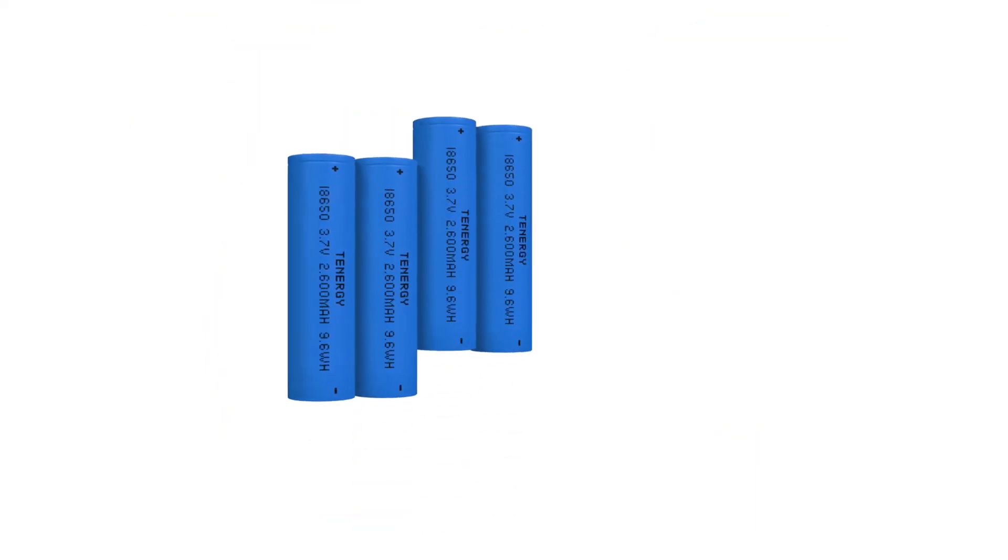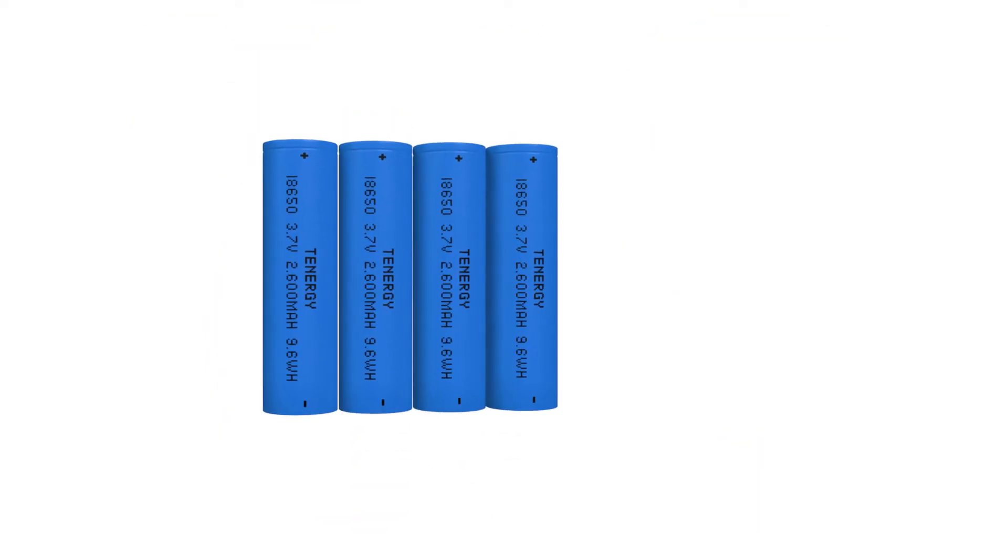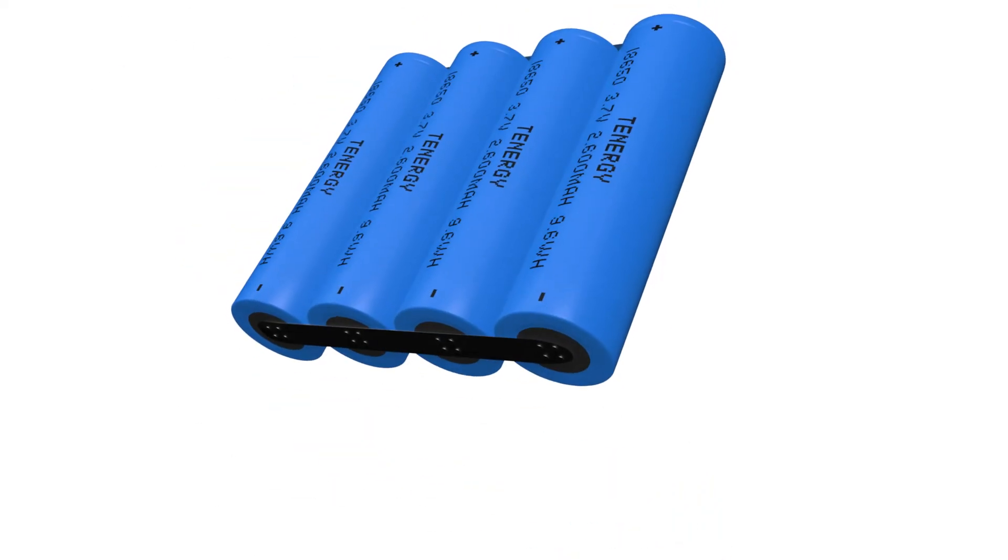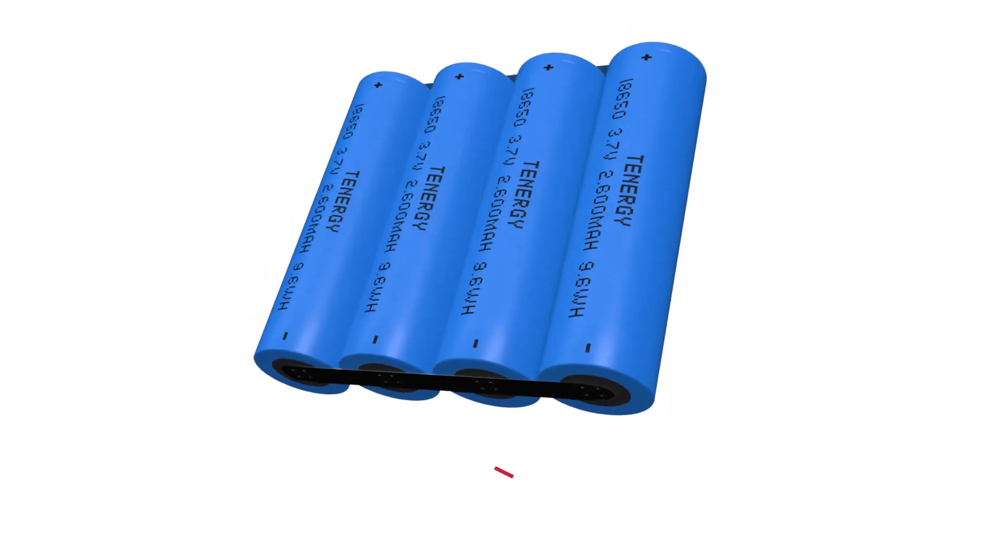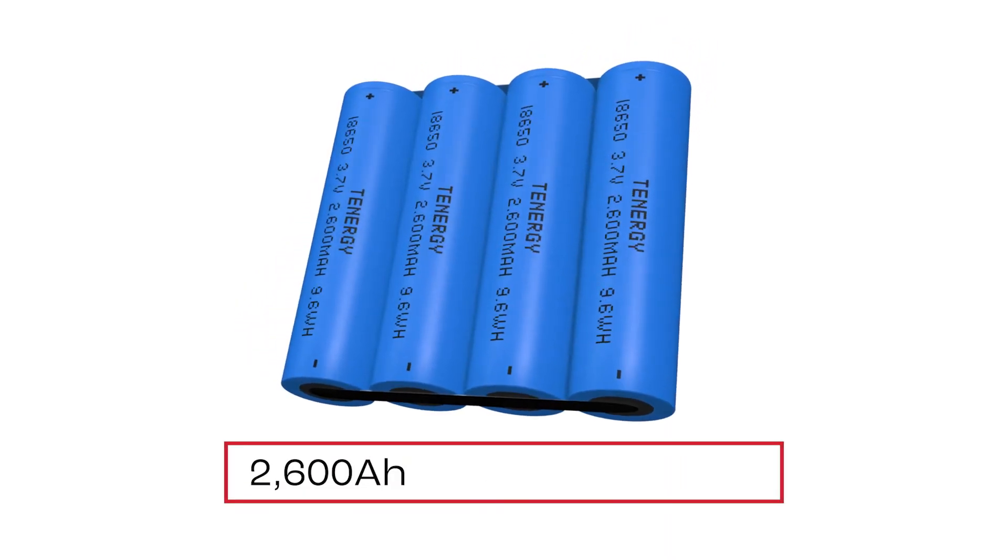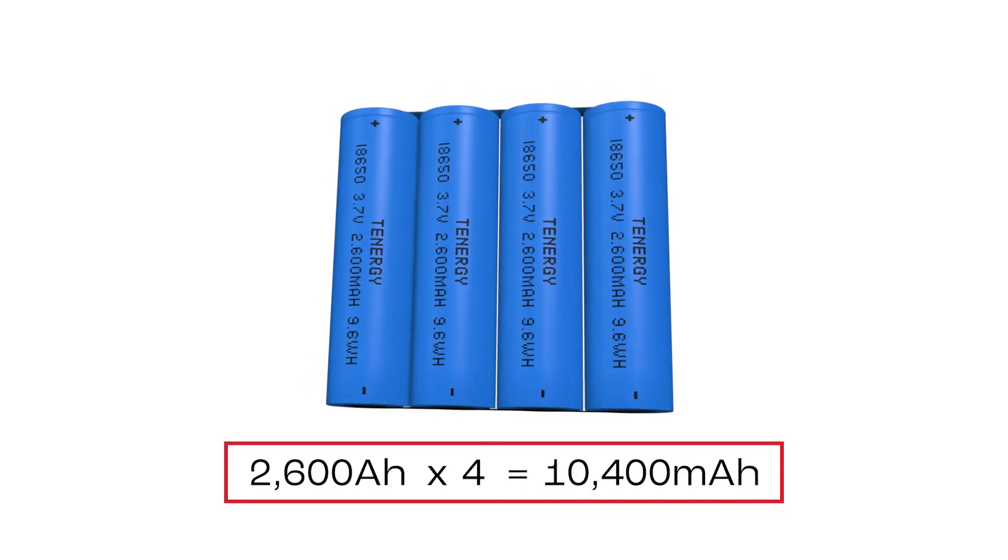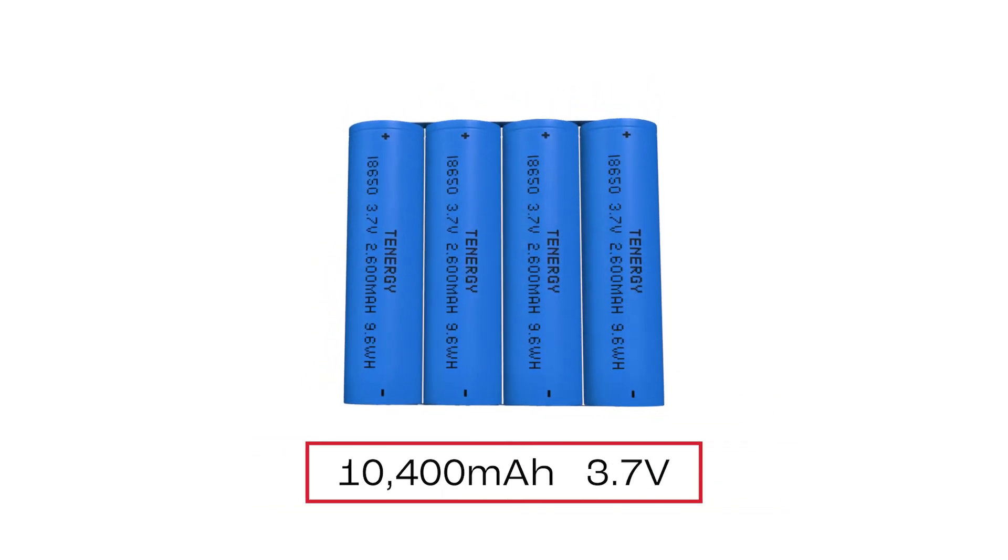Using the same cells from our earlier example, I'll connect them in parallel this time by joining their positive terminals together and the negative terminals together like this. We'll get a battery pack with a total capacity of 2600 milliamp hours multiplied by 4 which will give us 10400 milliamp hours and its voltage will still be 3.7 volts.